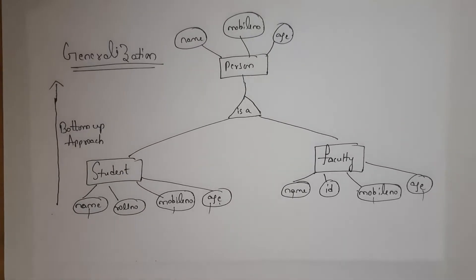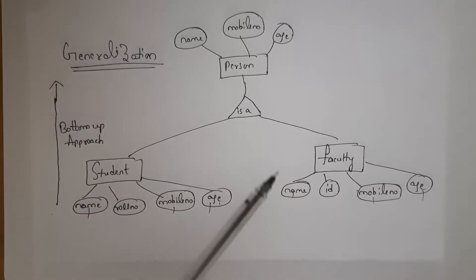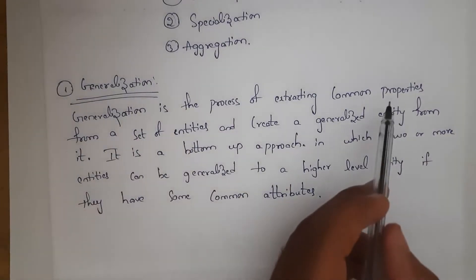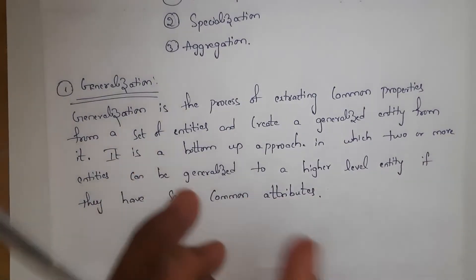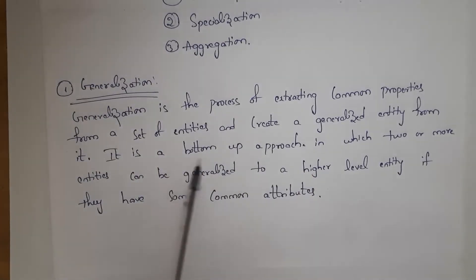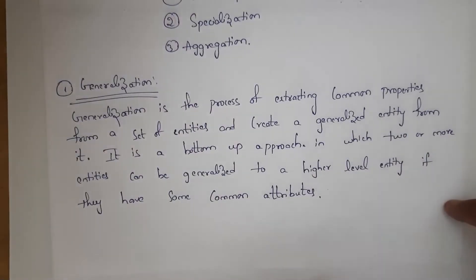This is known as generalization. Generalization follows a bottom-up approach, meaning from two entities, by selecting common attributes, we create a new entity. Generalization is a process of extracting common properties from a set of entities and creating a generalized entity from it. It is a bottom-up approach in which two or more entities can generalize to a higher-level entity if they have common attributes.